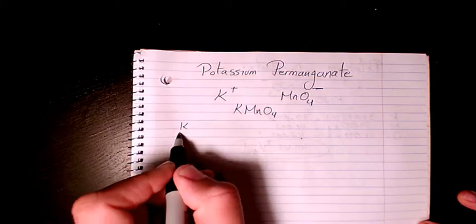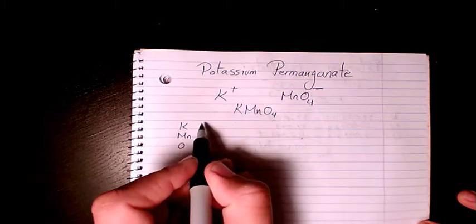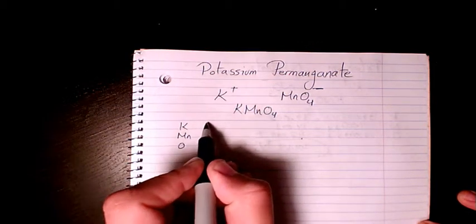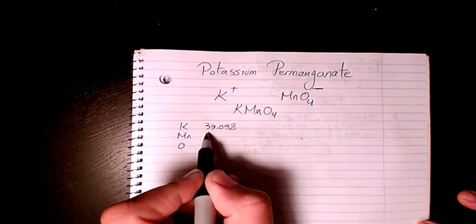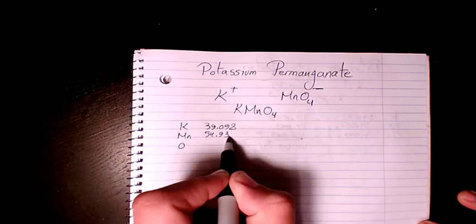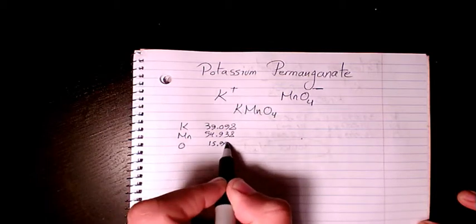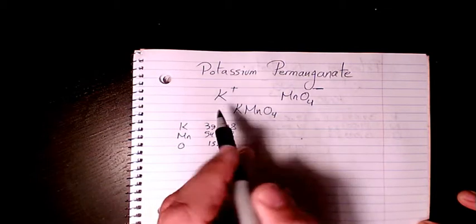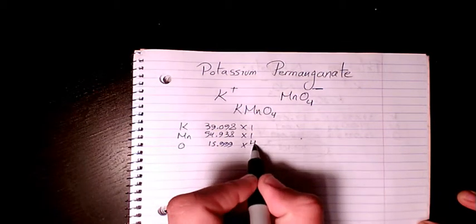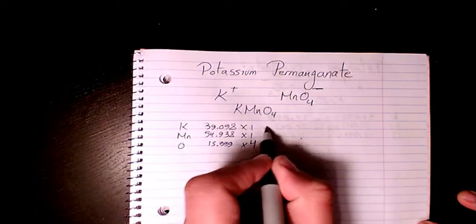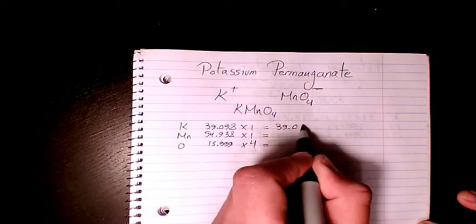the elements and find out the atomic mass from your periodic table. K is 39.098, Mn is 54.938, and oxygen is 15.999. How many atoms of potassium do we have? Just one. Mn we have just one, and oxygen is 4.